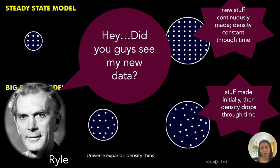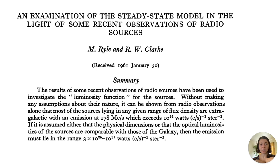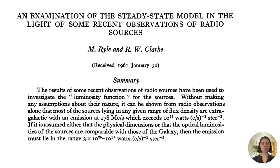Along comes Ryle, who also asks: have you seen my new data? Some background: when we look out into the night sky, the further away something is, the further back in time we're looking. Moonlight takes about a second to reach us, so when we see it, we're seeing light from about a second ago. Sunlight takes about eight minutes, so we're looking back eight minutes when we see the sun. Extrapolating: the dimmest things in the night sky are the furthest away and thus the furthest back in time.